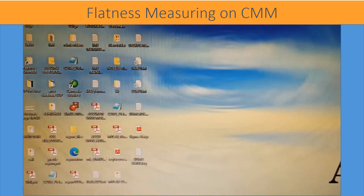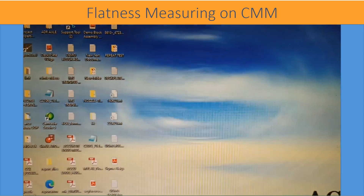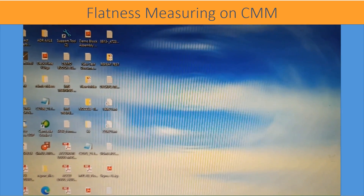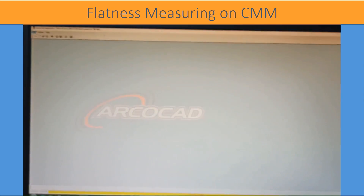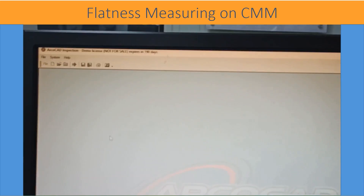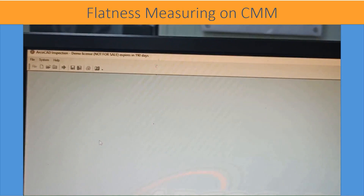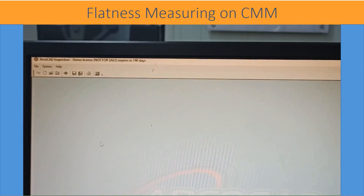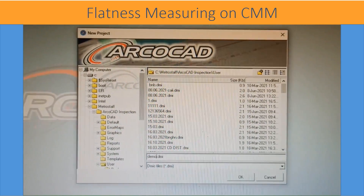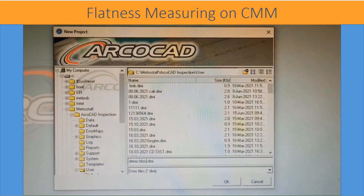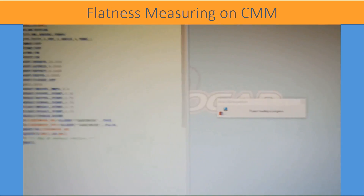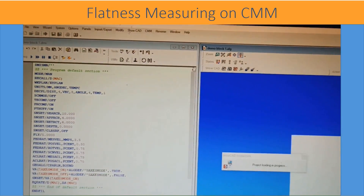Now let us start the practical measurement on a three-coordinate measuring machine on a demo component. Let us start the software Archocad. Once you click the icon on the screen, it would display 'starting the Archocad software.' The main screen appears — from the file drop-down menu, select New Project.